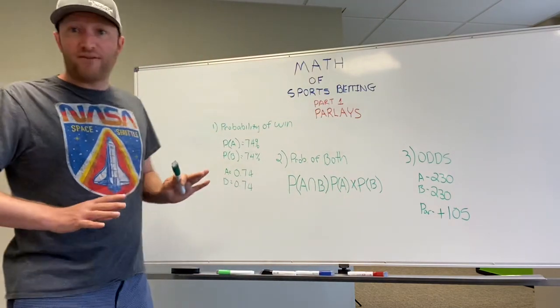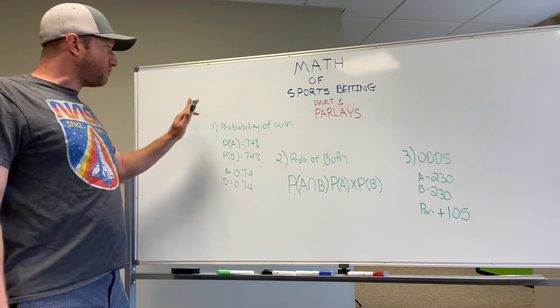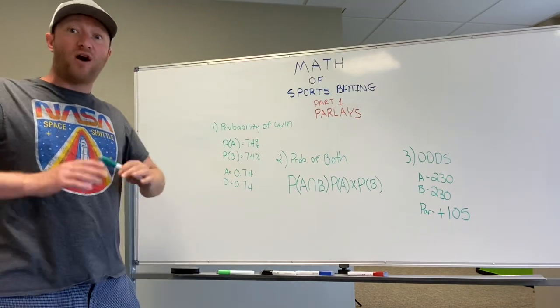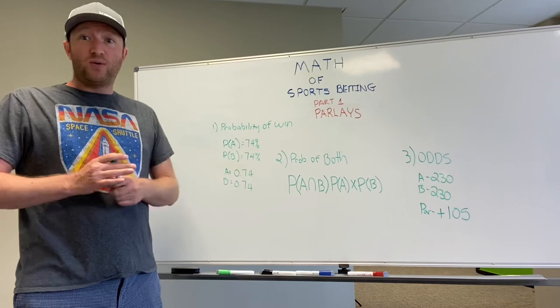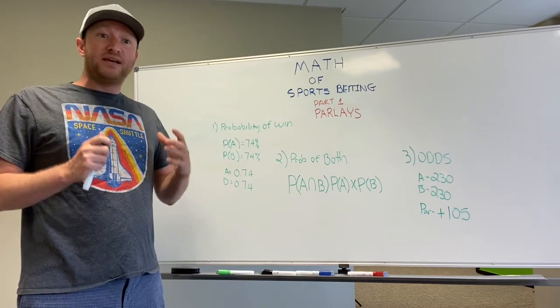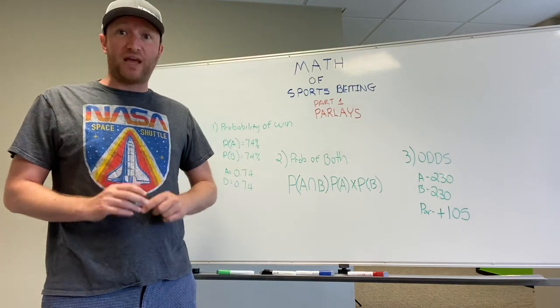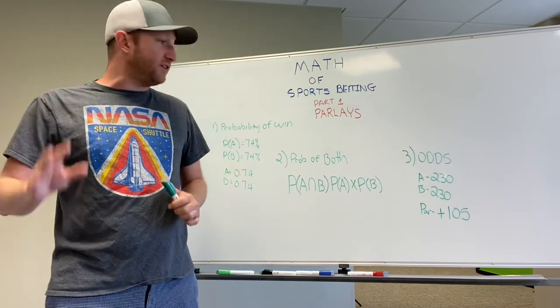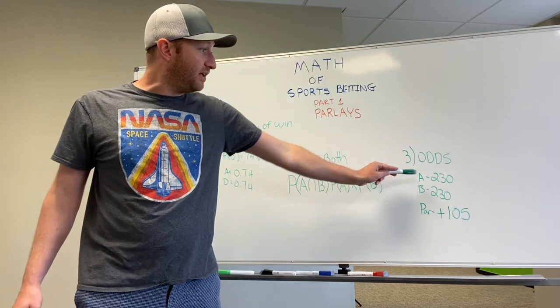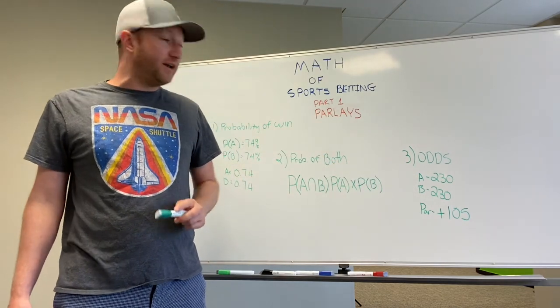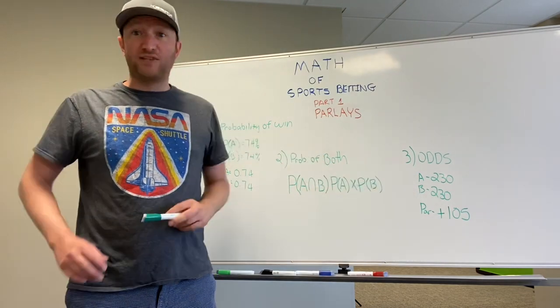Let's jump into it. I've always said don't bet parlays because the opportunity to overcome a 10% house edge on a two team parlay is a lot harder than it is to overcome the four and a half percent house edge on a straight bet. On a two team parlay, typically a 10% house edge versus a four and a half percent house edge on straight up bet. So I say straight up bets are better.